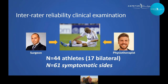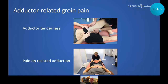For this project, we included 44 athletes, of whom 17 had bilateral long-standing groin pain, giving 61 symptomatic sites, though we assessed all 88 groins in a standardized manner. For adductor-related groin pain, key clinical examination components are adductor palpation — where the athlete must report recognizable injury pain — and resisted adduction testing, again with the athlete reporting recognizable injury pain in the adductors. The palpation assessed included the adductor longus origin, tendon, muscle, gracilis, pectineus, and adductor magnus.